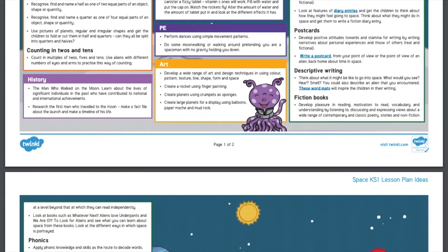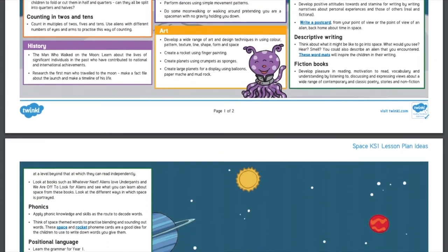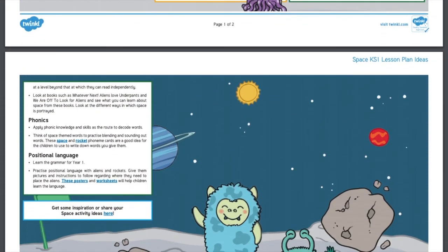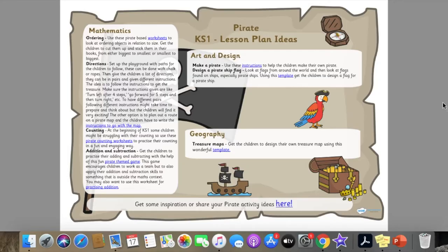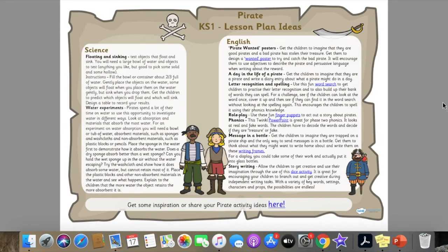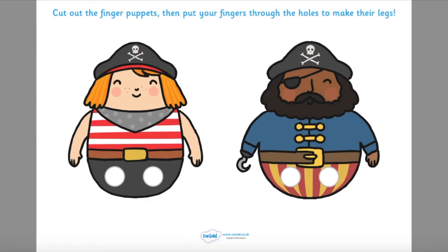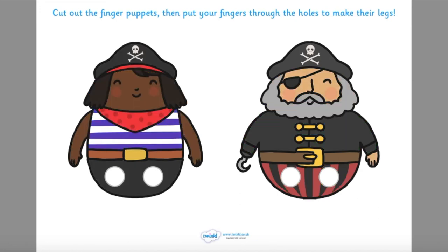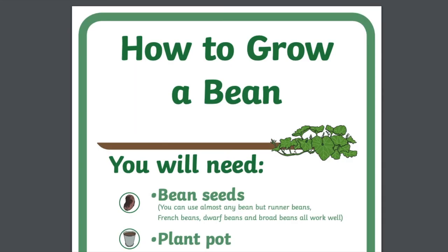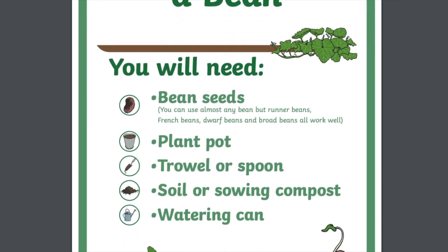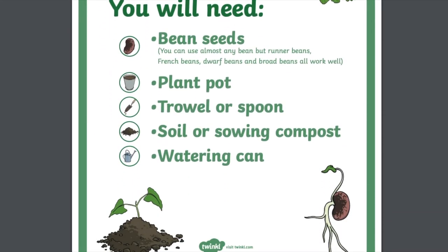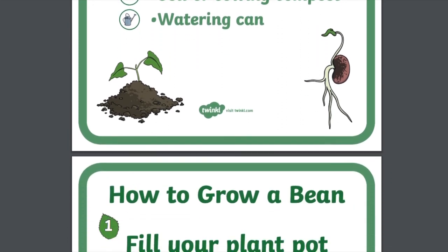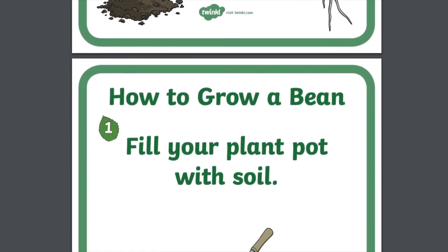Lesson plan ideas are great if you're looking to cover a theme across all subjects at home or at school, but you're struggling slightly to think of a link in a particular subject. At school you could even use lesson ideas to help your classroom areas, such as these finger puppets for a role-play area, but you could also use posters like these Rapunzel lesson ideas to decorate the classroom or home.